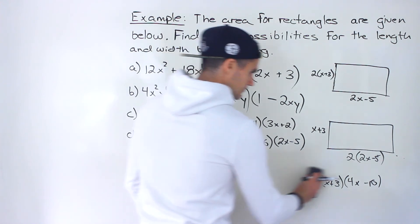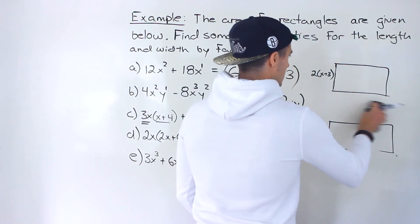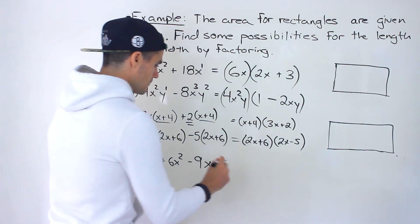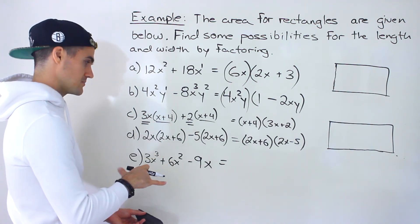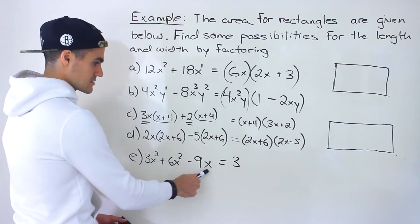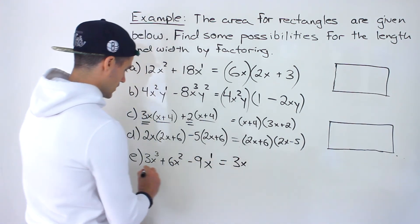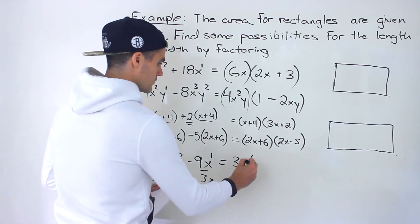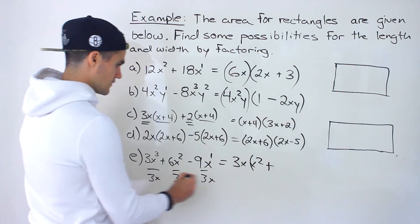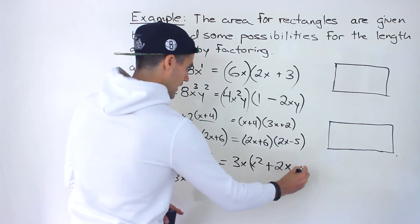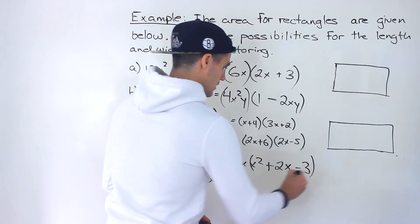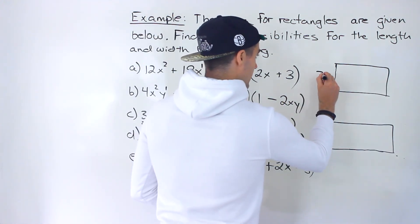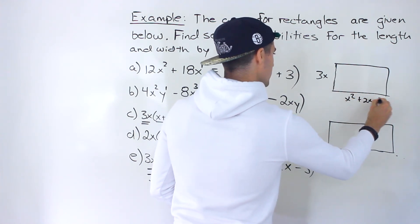Finally, for the last part, we have 3x cubed plus 6x squared minus 9x. Taking the greatest common factor: 3 is common to all coefficients, and x is in all terms with the lowest exponent being x to the 1, so we take out 3x. That leaves x squared plus 2x minus 3. One possibility is width = 3x and length = x squared plus 2x minus 3.